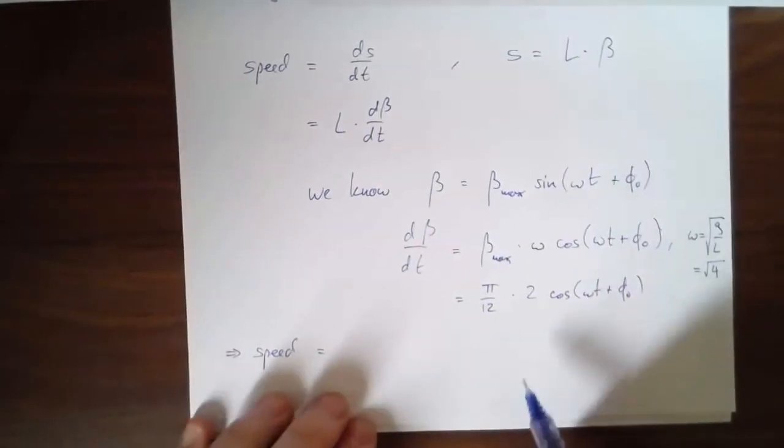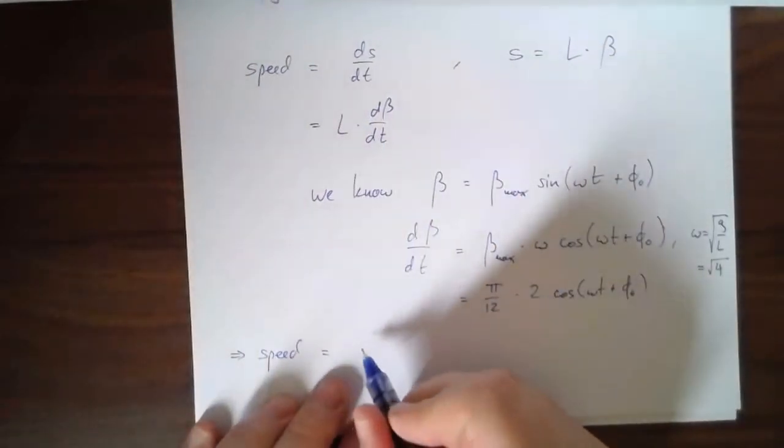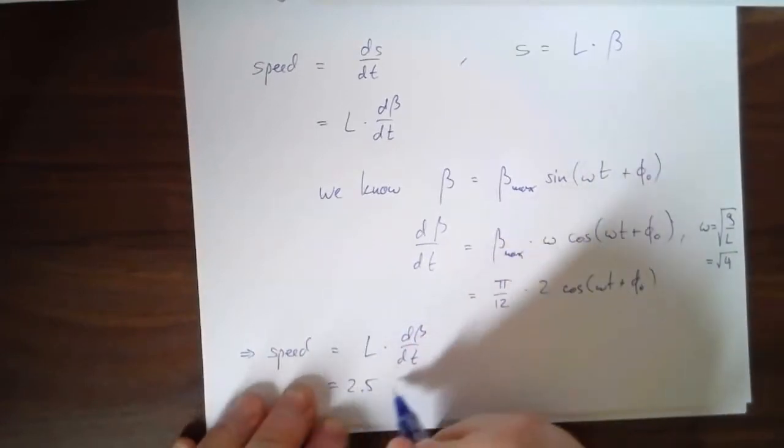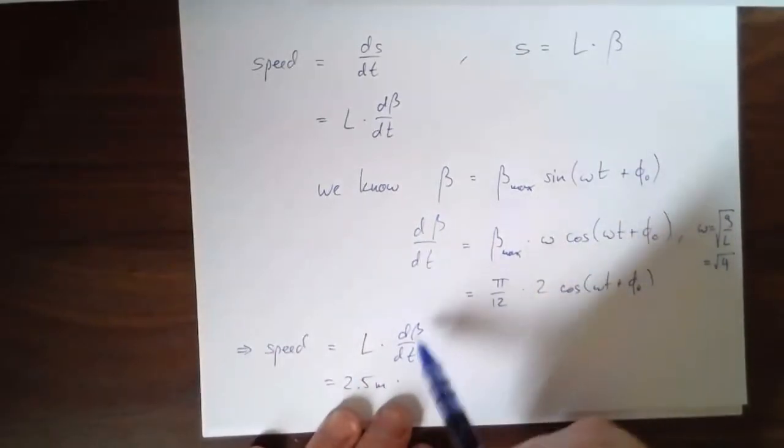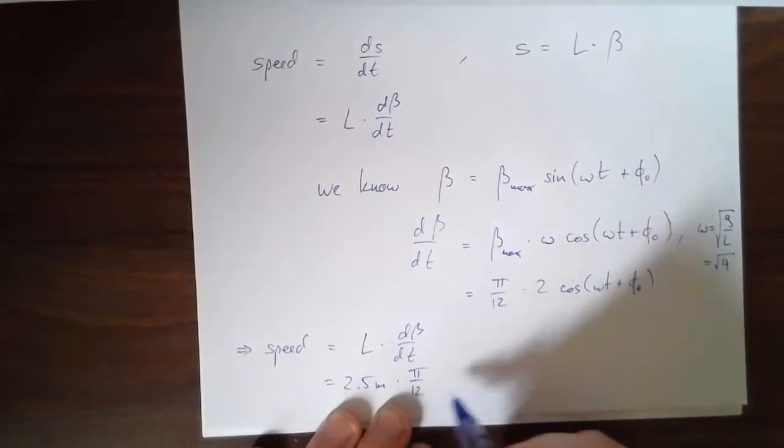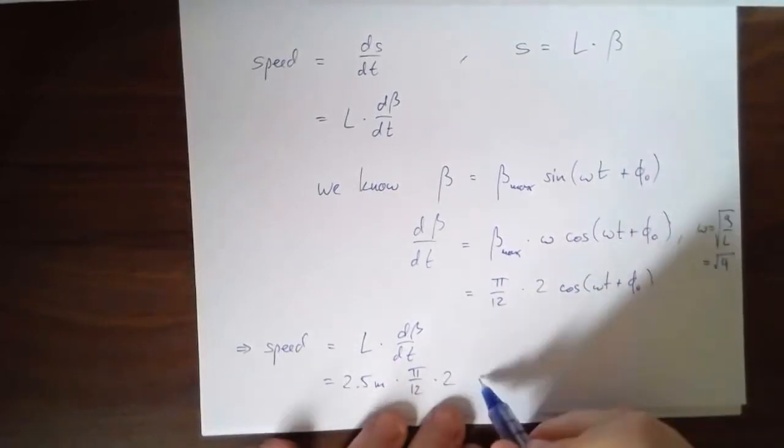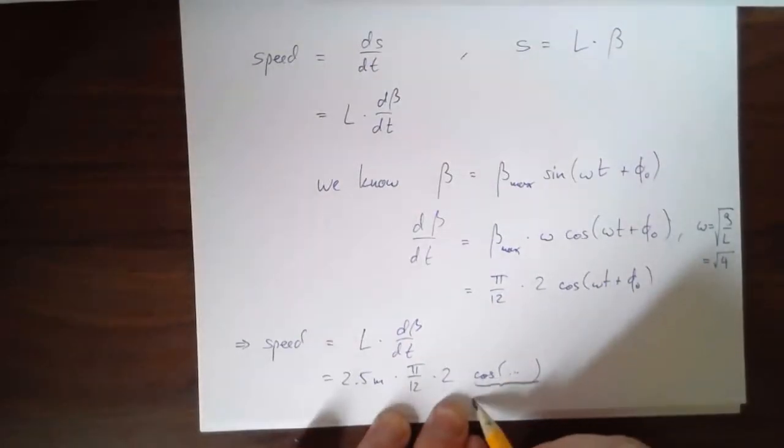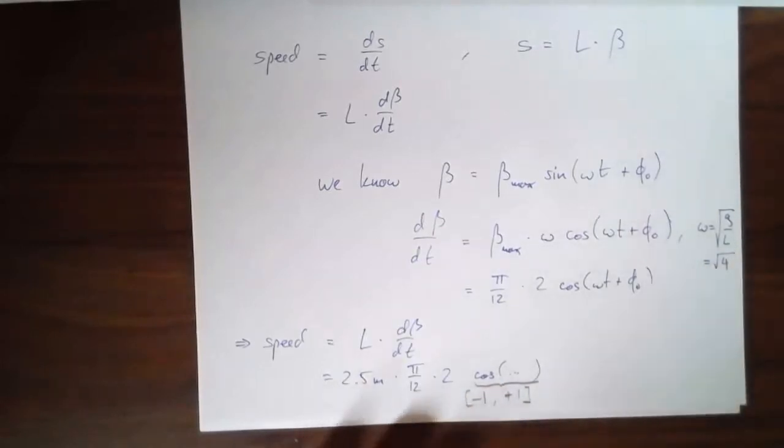Speed is equal to l, that's 2.5. We write down l times d beta dt, which is 2.5 meters times d beta dt, pi over 12 times 2. What should I put here? Well, the cosine of this, who cares what's in it? Because I only care about the speed at the bottom, and I know at the bottom the speed is a maximum. So the maximum, this is going to be between, this is going to be between 0, minus 1 and plus 1. It's in that interval. So to get a maximum speed, I'm just going to plug in plus 1.